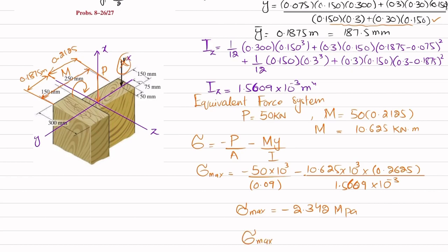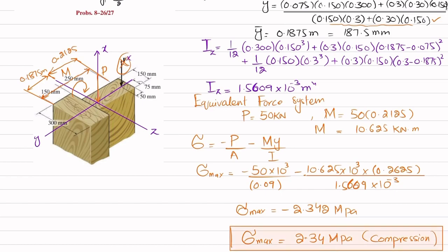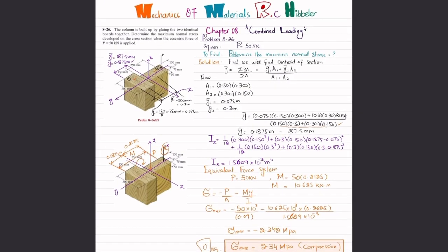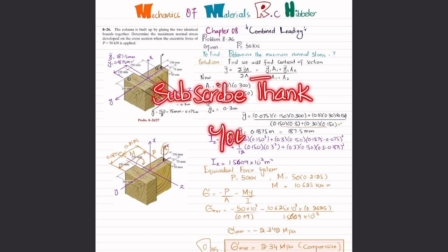Since the value is negative, the maximum normal stress is 2.34 MPa in compression. That is the answer to problem 8-26. I hope you enjoyed this video. If you're new to the channel, please subscribe and press the bell icon for notifications on my latest videos. Any questions, ask in the comments. Thank you for watching.